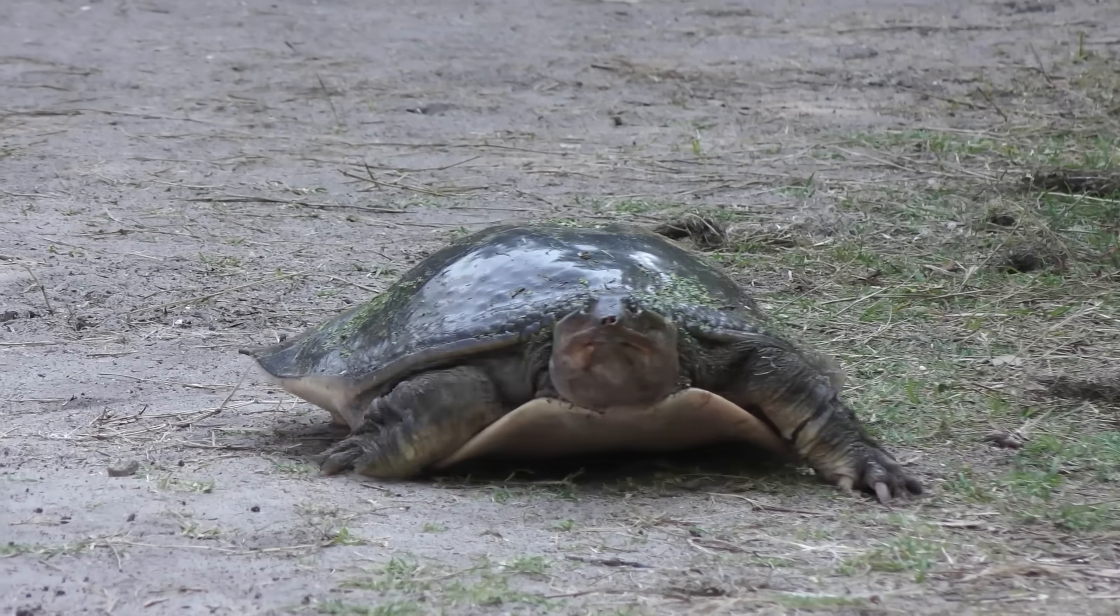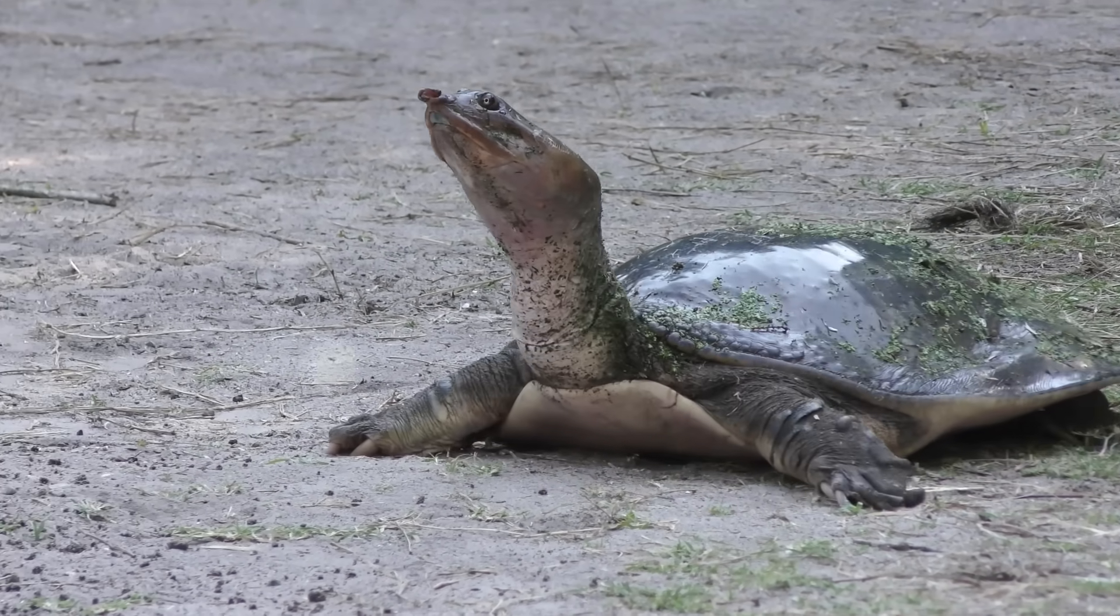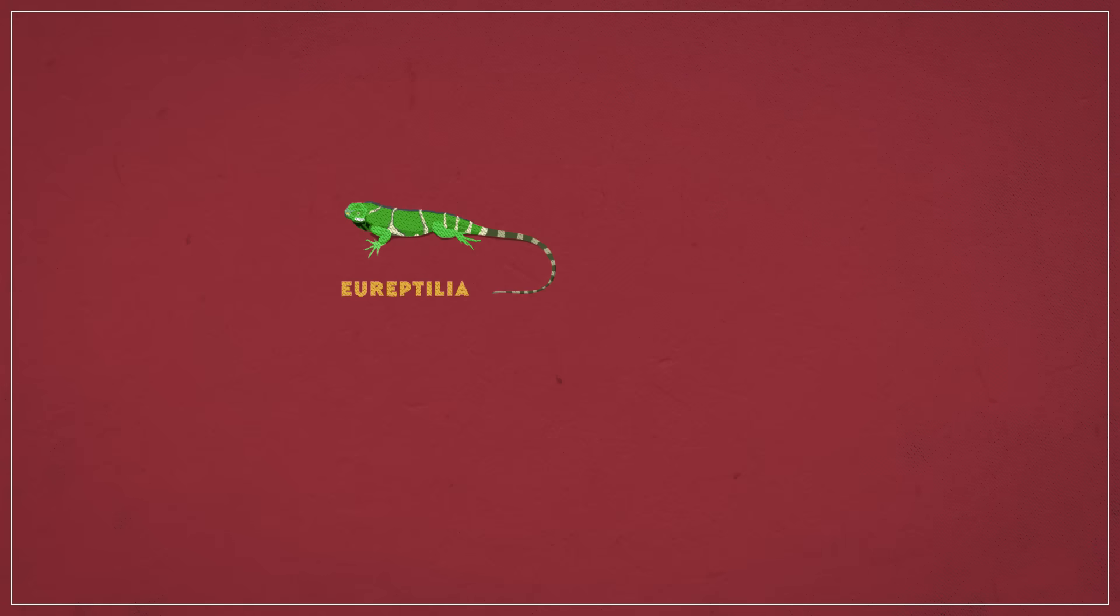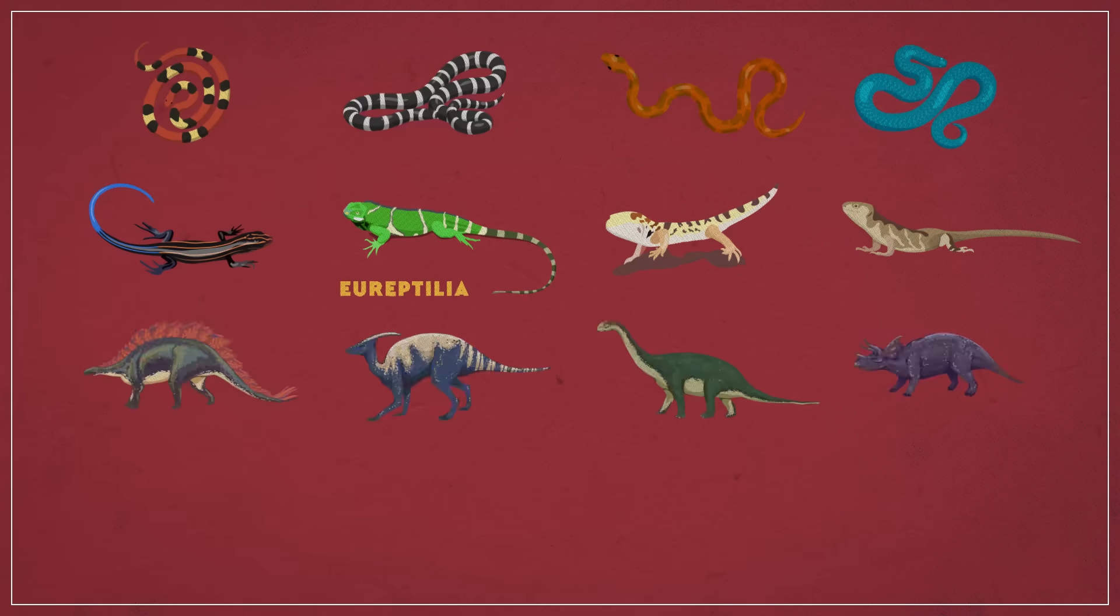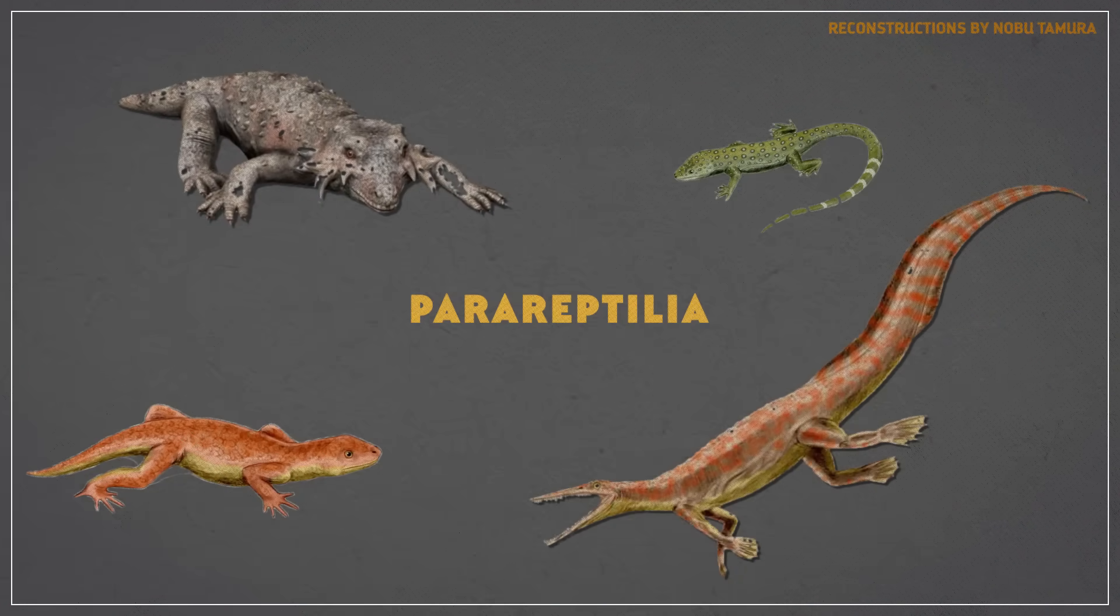So the discovery of this creature kicked off a debate about which major taxonomic group, or clade, of reptiles that turtles belong to. Now, most reptiles fall under the clade known as Eureptilia, or true reptiles. This includes stuff like lizards, snakes, dinosaurs, and birds. But there's also Parareptilia, or side reptiles.